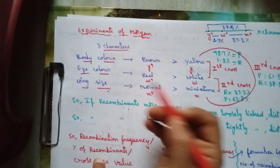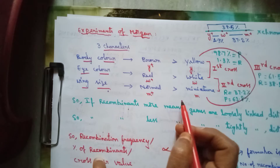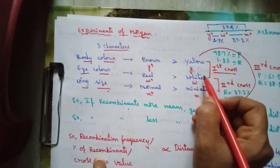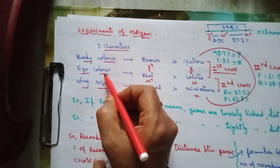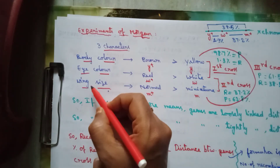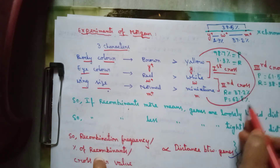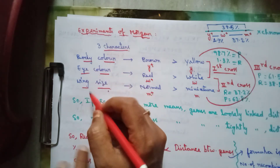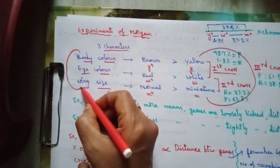Morgan conducted three types of dihybrid crosses. In the first cross, he crossed two flies differing in body color and eye color. In the second cross, he crossed two flies differing in eye color and wing size. In the third dihybrid cross, he crossed two flies differing in body color and wing size.